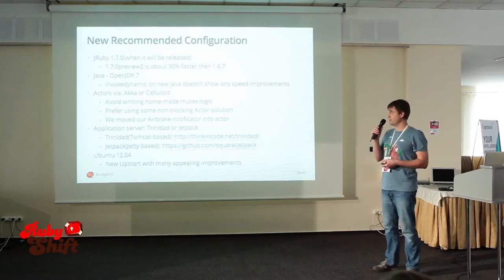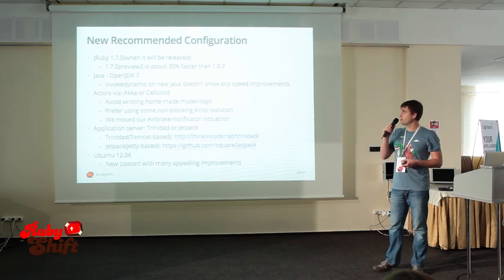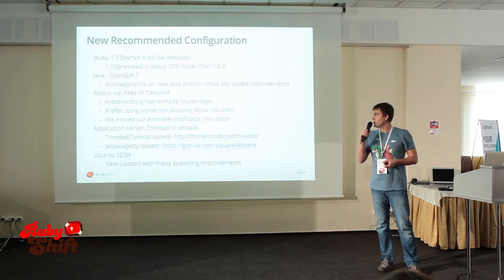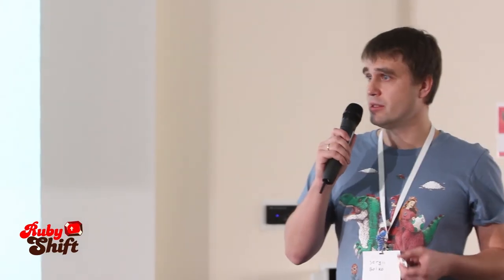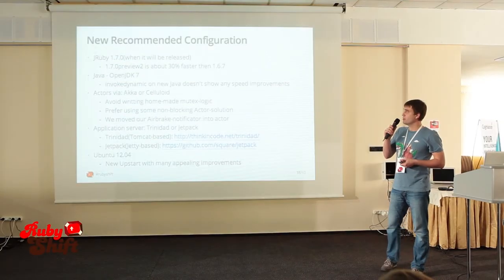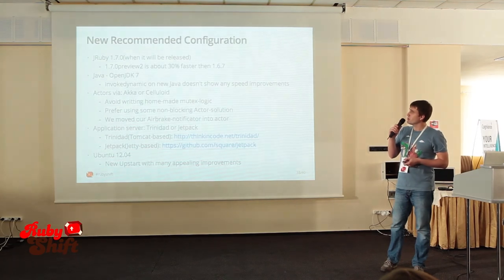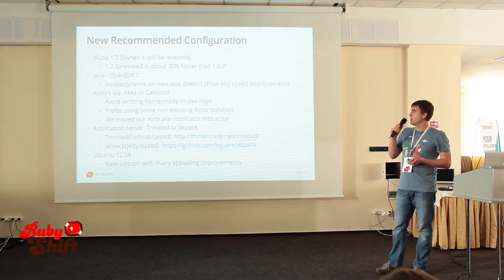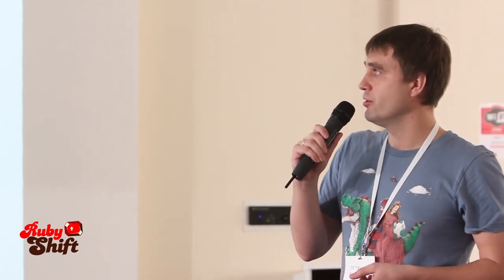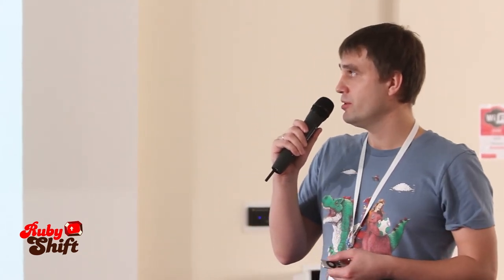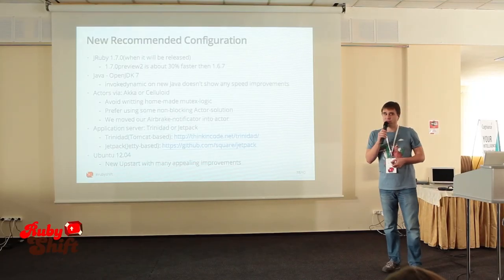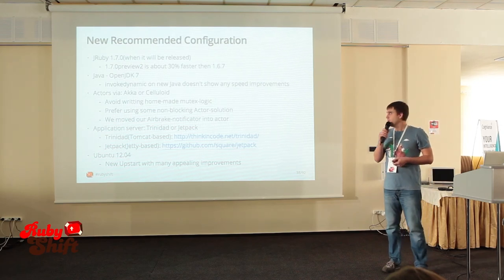For today I suggest, if you think about using JRuby in production, to use the new JRuby 1.7 when it is released. Currently I tried preview 2 and it's about 30% faster than the previous stable version. OpenJDK 7 is also very good because it provides some additional speed-up. I tried to use invokedynamic in our configuration but it didn't give us any speed-up — so for us it doesn't work, maybe in JDK 8 it will. For actors you can use Akka or the Ruby solution Celluloid, and avoid writing any mutex logic. Use actors because it's a very simple and easy solution for any developer.